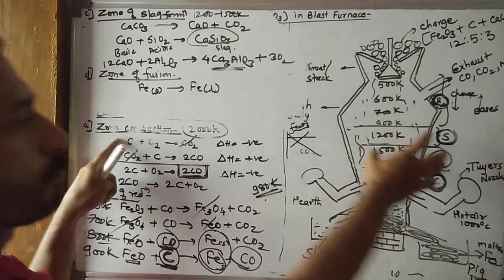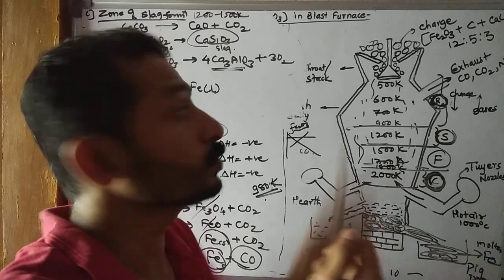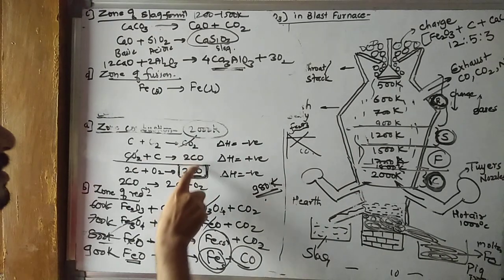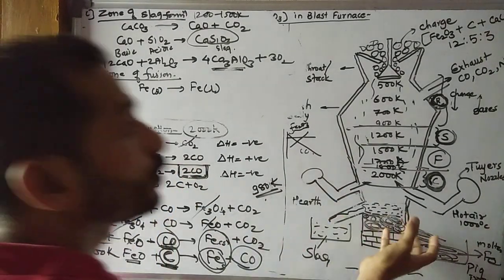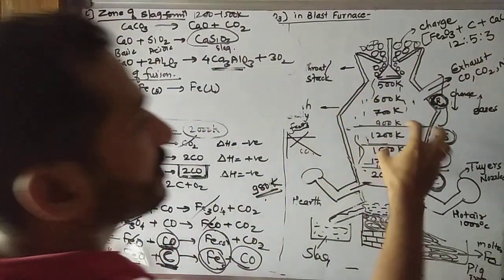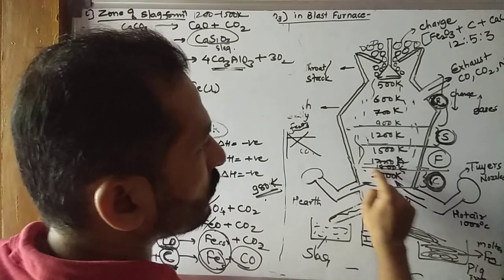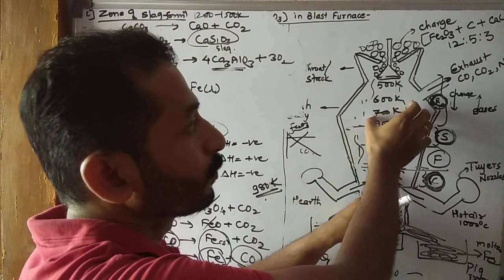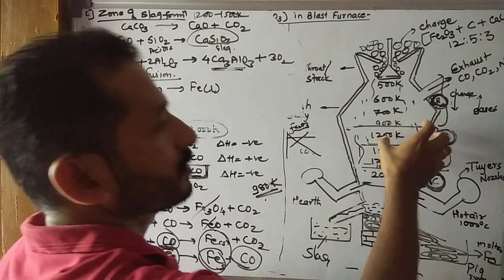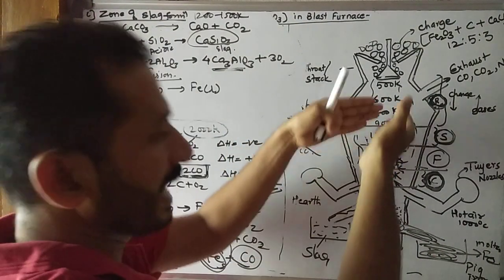Here we learned how iron is obtained from hematite ore through the blast furnace. First, combustion happens in this region where temperature is high, and hot air at 1000 degree Celsius is passed. Combustion causes coke to burn and form CO. That CO moves upward and performs reduction above. After reduction, in the lower region, slag is formed. Slag comes down, and then fusion occurs. In the lower region at about 1800 Kelvin, solid iron that was formed in the reduction zone becomes liquid. Liquid iron comes down, and slag also comes down.